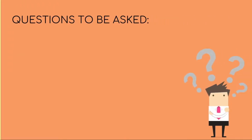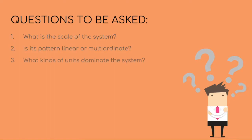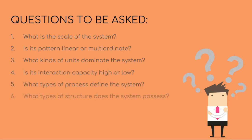The following questions need to be asked about any international system: What is the scale of the system? Is its pattern linear or multi-ordinate? What kinds of units dominate the system? Is its interaction capacity high or low? What types of processes define the system? What types of structures does the system possess, and how do units and structures interact with each other?